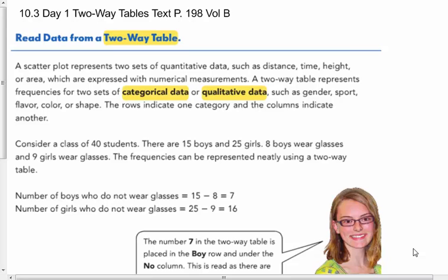A two-way table represents frequencies for two sets of categorical data or qualitative data, such as gender, sport, flavor, color, or shape. The rows indicate one category and the columns indicate another.